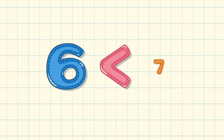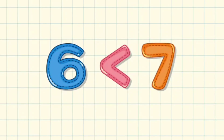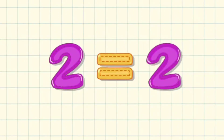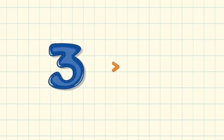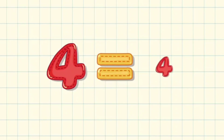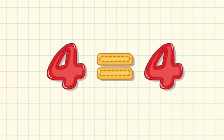Yes, next. 6 is less than 7. 2 is equal to 2, the number is same. 3 is greater than 1. Very good. Next, 4 is equal to 4, the number is same. Next.